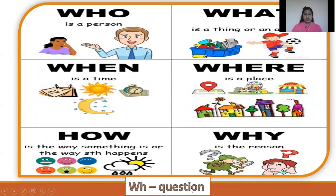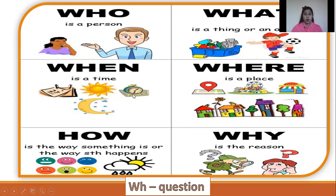WH Questions. When we say WHO, it refers to a person. WHAT refers to things or actions. WHEN refers to time or day. WHERE refers to a place. HOW — how many, or emotions. WHY — a reason.